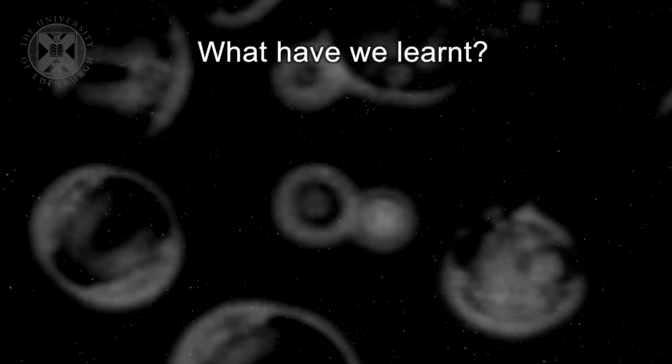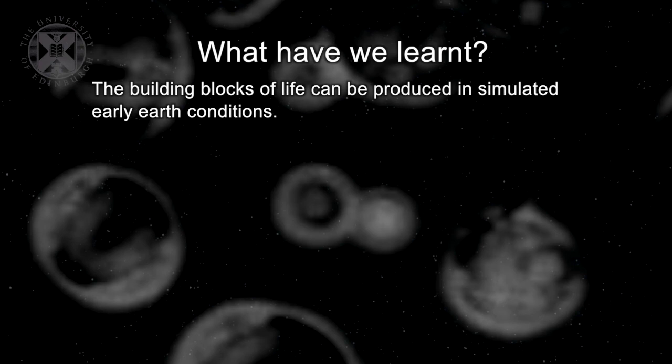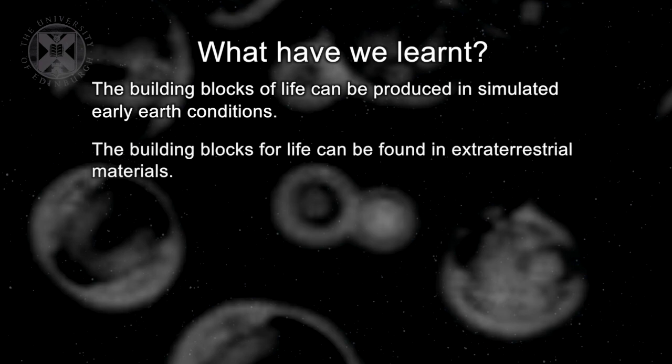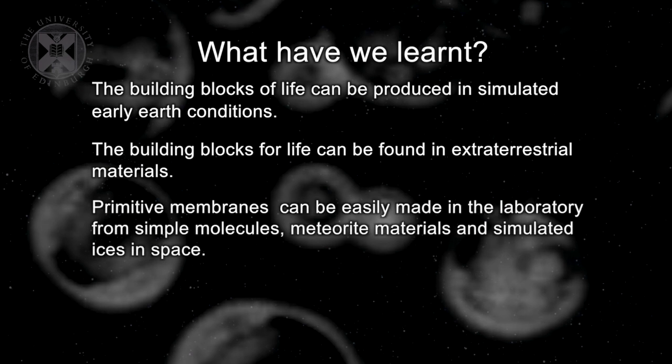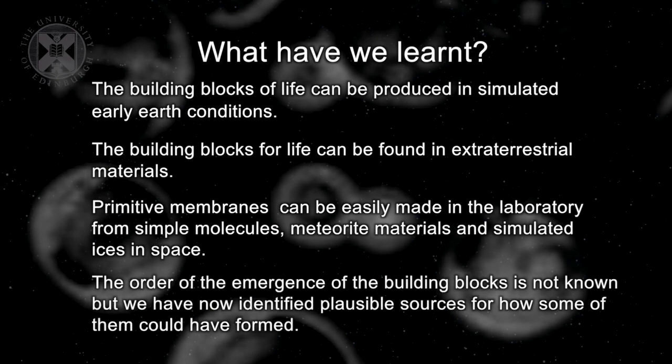So what have we learned in this lecture? We've learned that the building blocks of life can be produced in simulated early Earth conditions. We've also learned that those building blocks can be found in extraterrestrial materials, so they could have been produced on the early Earth and they also could have been delivered to the surface in extraterrestrial materials. We've also learned that primitive membranes that can enclose chemical reactions necessary for the first cells to form can be easily made in the laboratory from simple molecules, even meteoritic materials and simulated materials formed on interstellar ices. But we've also learned that the order of the emergence of the building blocks is not known. But what is important is that astrobiology has now at least identified plausible sources of these early building blocks and some of the processes by which they may have come together and led to the first life forms on Earth.